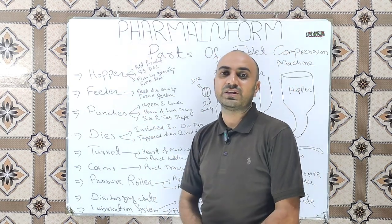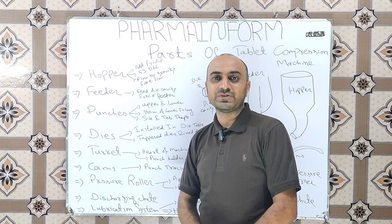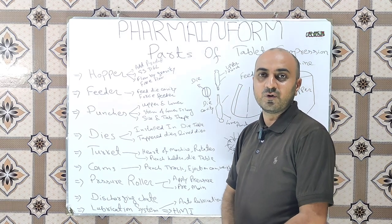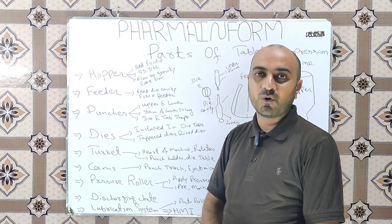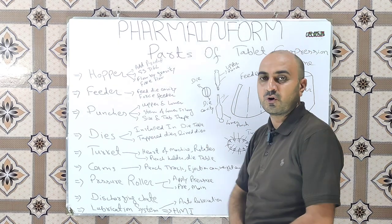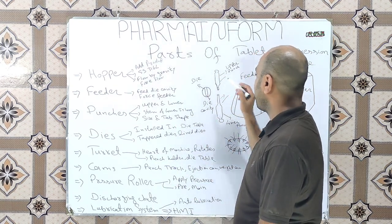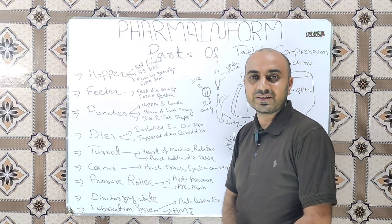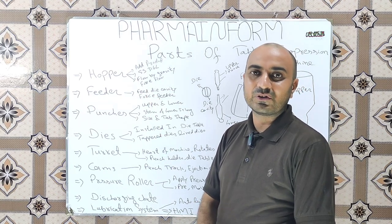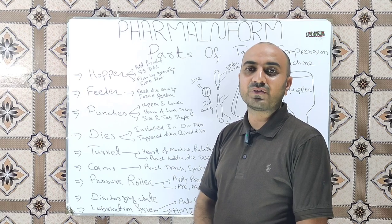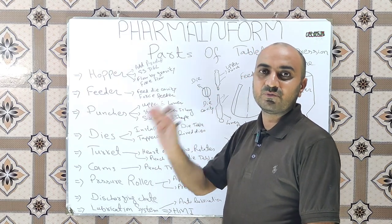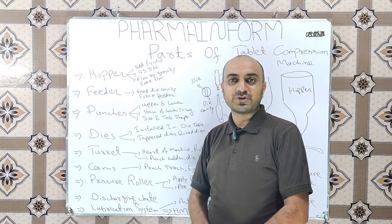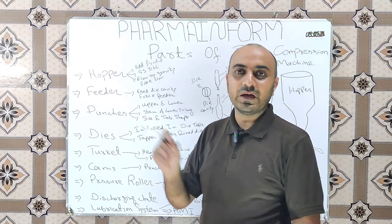The third main component of the compression machine is the punches. We have two types of punches: upper punch and lower punch. The difference between them is that the tip or stem of the lower punch is longer than the upper punch. The size and shape of the tablet depends upon the punches installed on the compression machine — punches act like a mold, and the tablet shape will be the same as the shape of the punches.